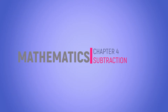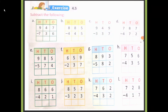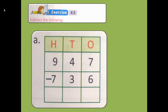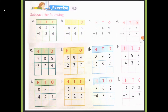Good morning class. In last class we have learnt about regrouping subtraction of three digits. Today we are going to learn about vertical subtraction without borrowing. We are going to subtract a three digit number from another three digit number without borrowing. Let's start Exercise 4.5. In this exercise we are going to solve problems which are vertical subtraction.